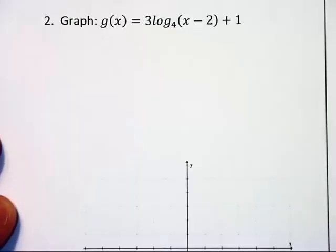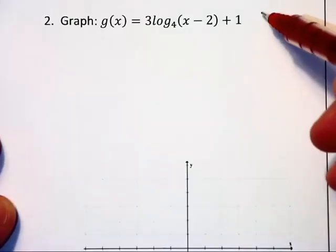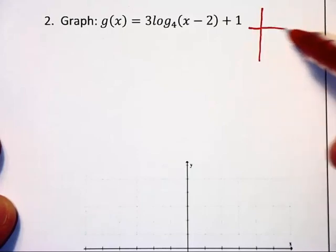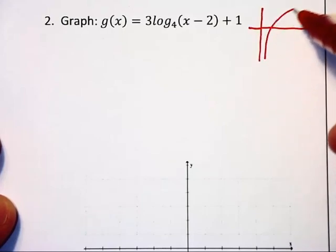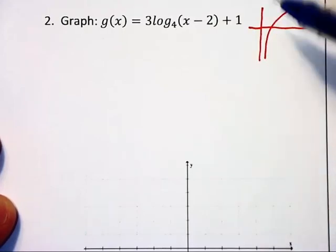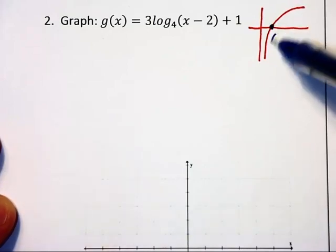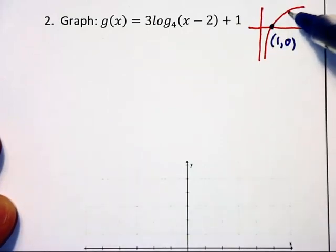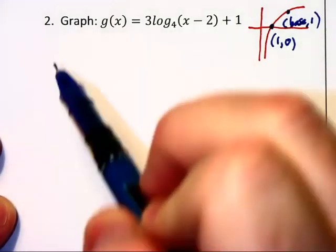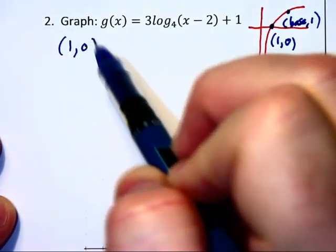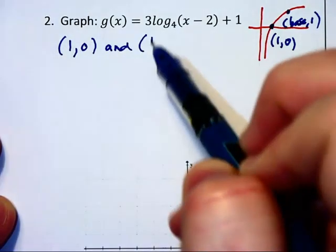Now let's graph this logarithmic equation. Recall what a basic log graph looks like. It has this general shape and goes through the point (1,0) and (base,1). I wrote kind of small there, so let's rewrite that: (1,0) and (base,1), which becomes (4,1).